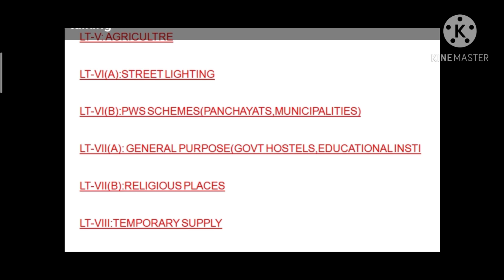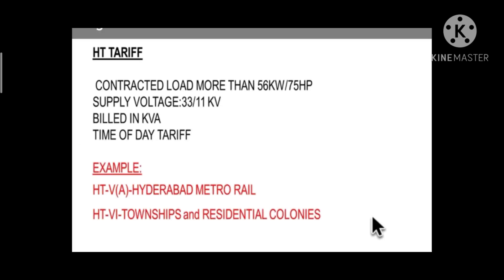The last type is high tension tariff, also known as contracted load. More than 56 kilowatt or 75 HP motors come under high tension tariffs. The total 33 kV and above lines are directly connected to this type of load. A simple example is the metro rail, which is the best example for high tension loads.